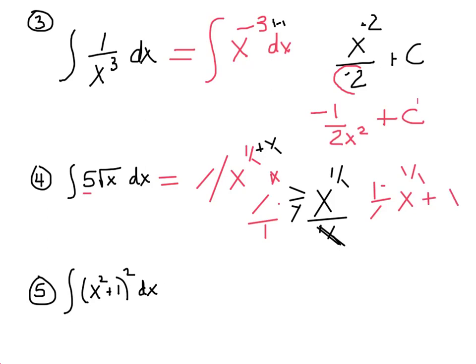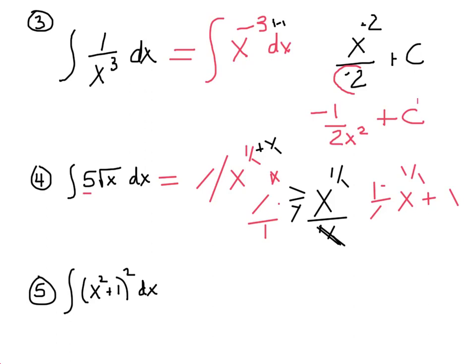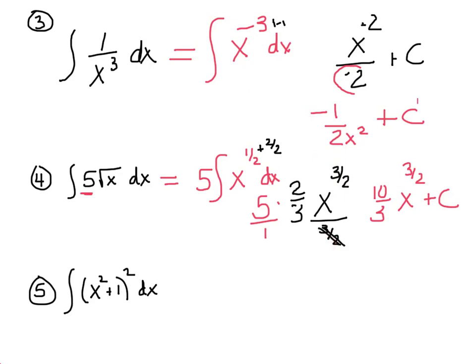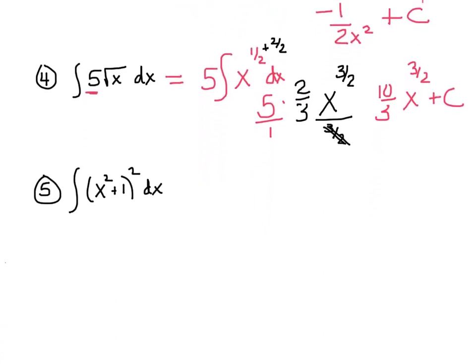Dividing by a fraction is the exact same thing as multiplying by its reciprocal — anytime I have a fraction and I'm supposed to divide by it, I'll multiply by its reciprocal instead. Number 5: the integral of the quantity x squared plus 1, squared. We have no chain rule in integration, so you really have to clean these up.